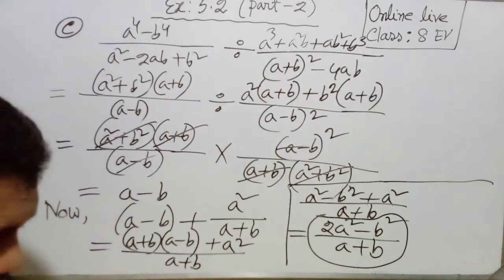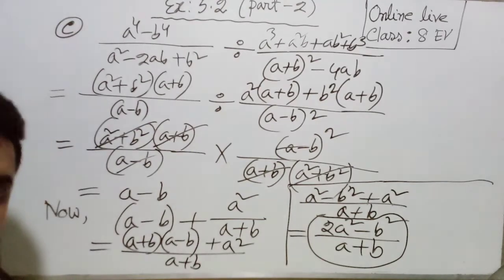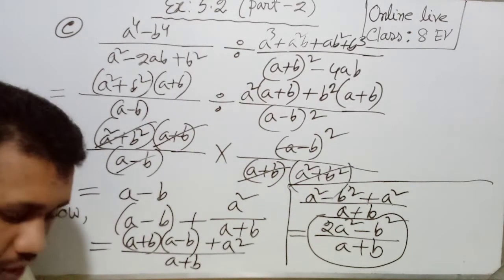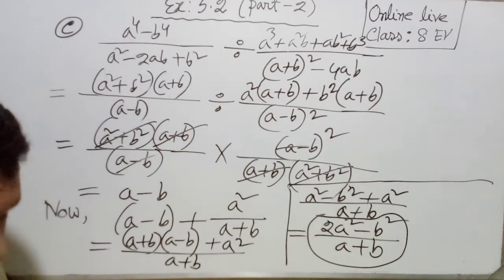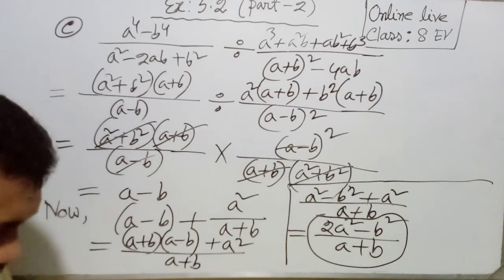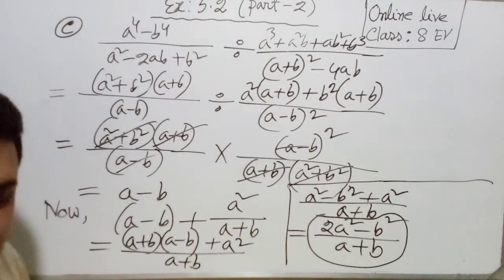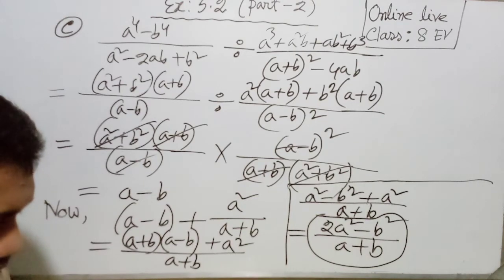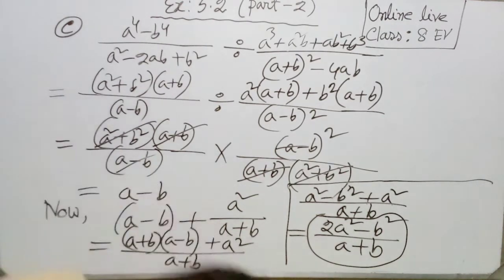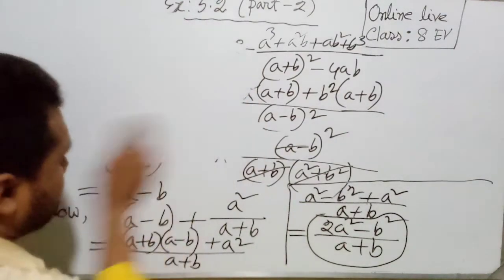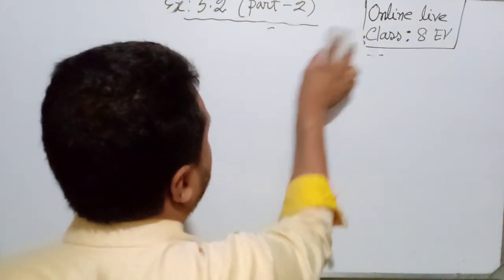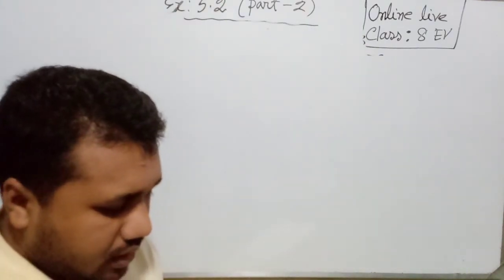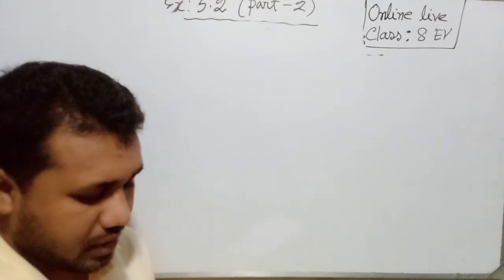Problem 18 — part b requires lowest form and part c requires converting to a common denominator, which we have already practiced. Now go to problem 19 and 20, which are similar types of problems. If we solve problem 19 you will be able to solve 20 yourself. Let's go to problem 19.